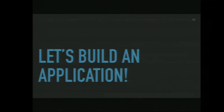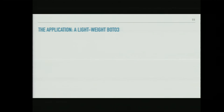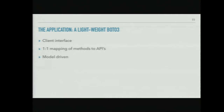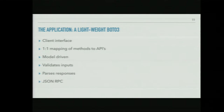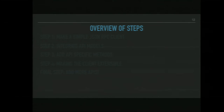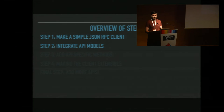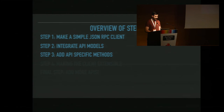Now let's actually build an application from the ground up that uses dynamic class generation — a lightweight Boto3. It involves a client interface where methods are one-to-one mappings to various APIs. This application will be model-driven with no code specific to any API method. It will validate inputs based on models, parse responses based on models, and for now support only JSON RPC protocol. The steps are: write a simple JSON RPC client, integrate API models for input validation and response parsing, add API-specific methods to the client, make it extensible, and finally add more APIs.